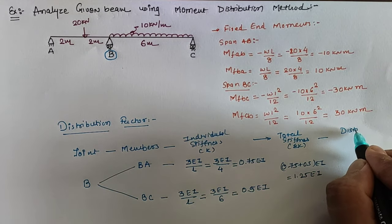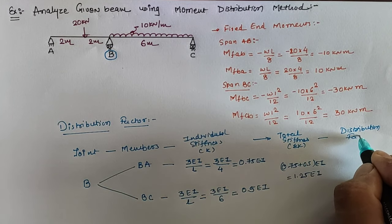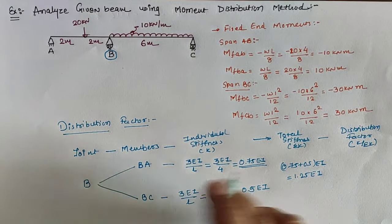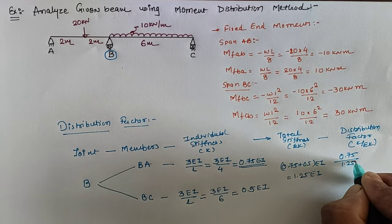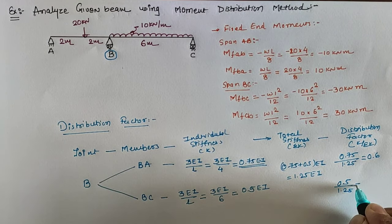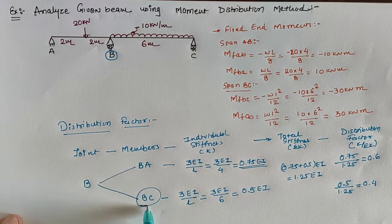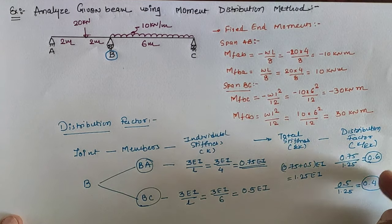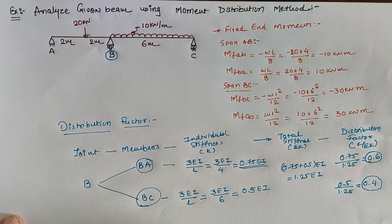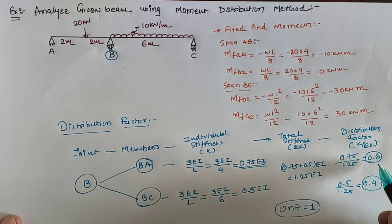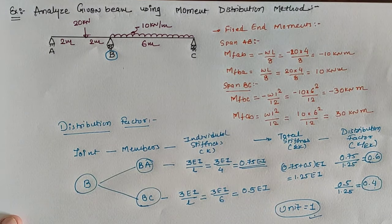The distribution factor is calculated as individual stiffness divided by total stiffness. For span BA: 0.75EI divided by 1.25EI equals 0.6. For span BC: 0.5EI divided by 1.25EI equals 0.4. Note that at any joint the summation of distribution factors must equal 1. In our case, 0.6 plus 0.4 equals 1, so the distribution factors are verified.